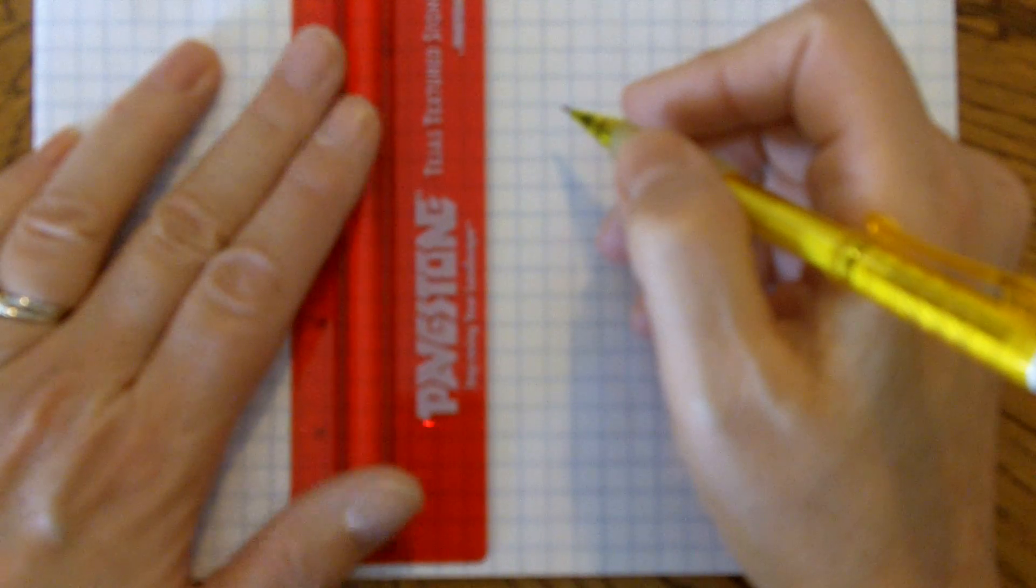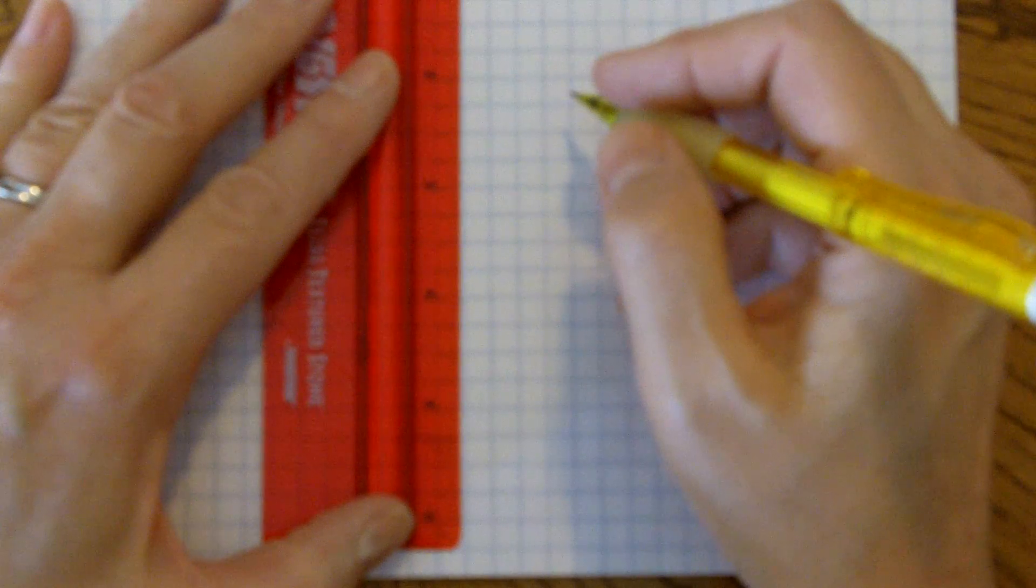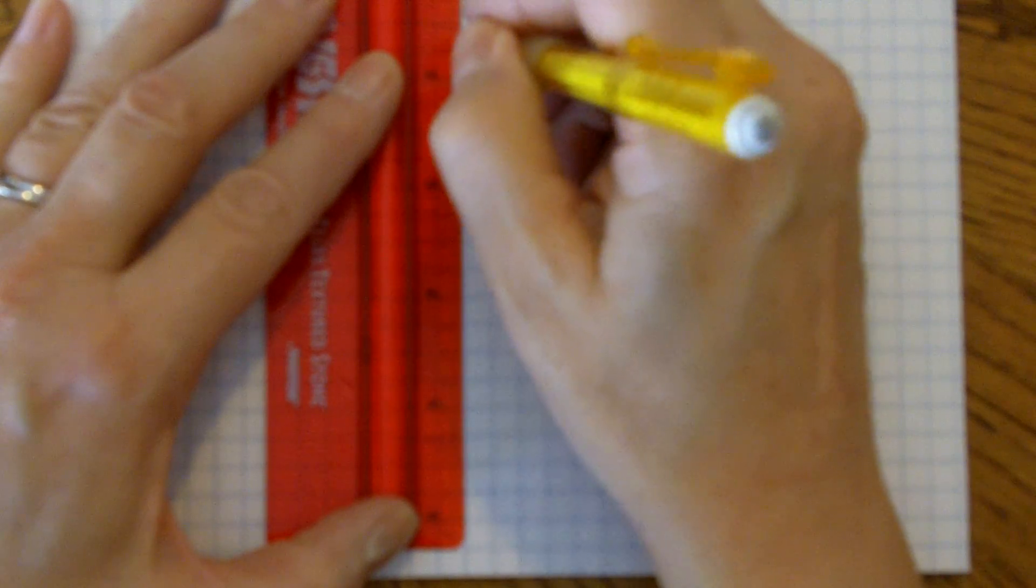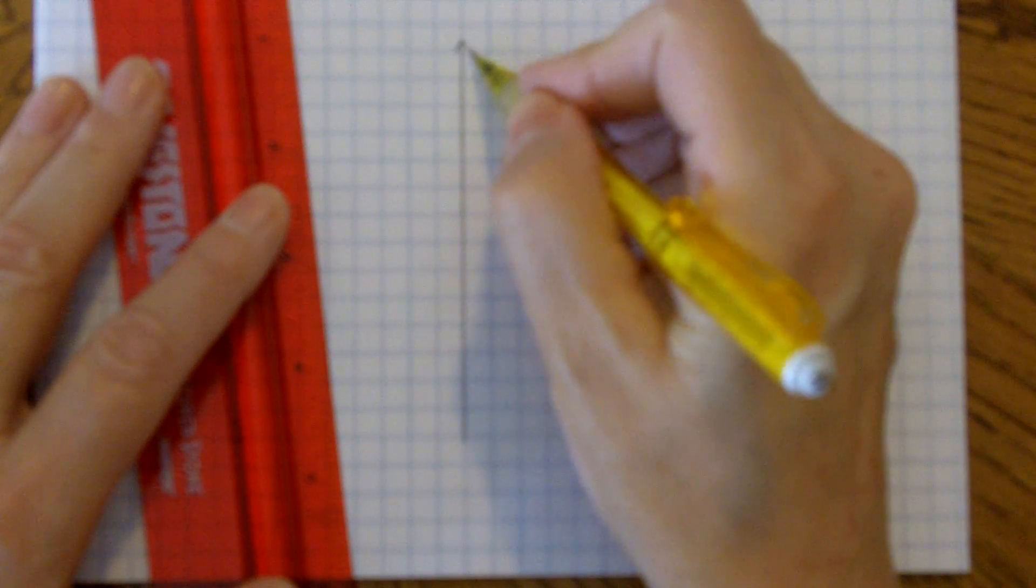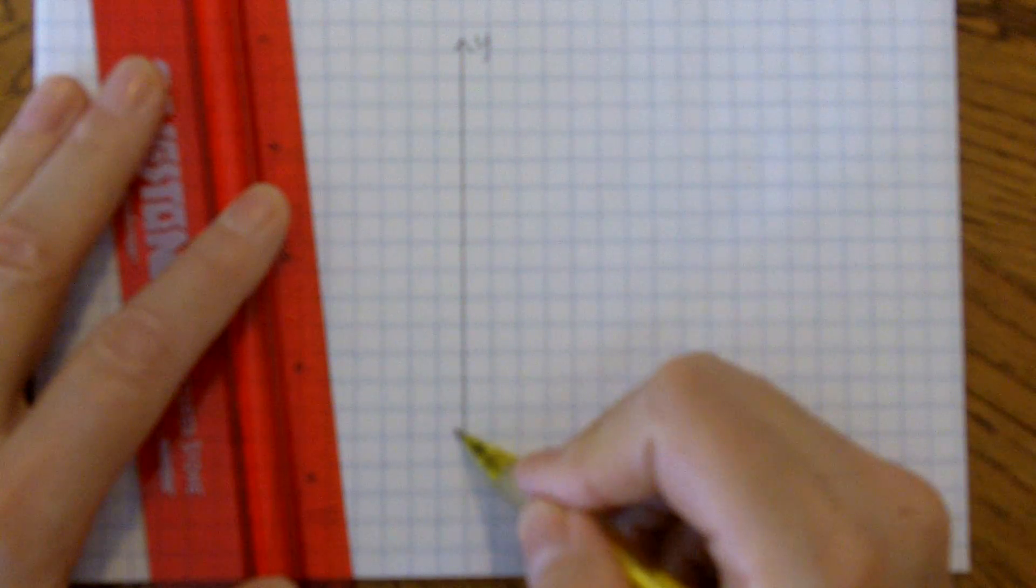Start by drawing the x and y axes with a ruler. Draw the axes along the lines that are on the graph paper.